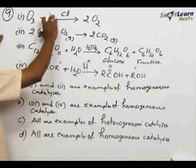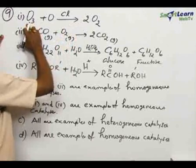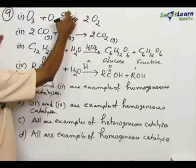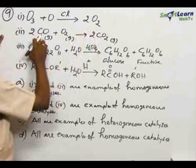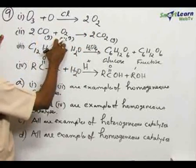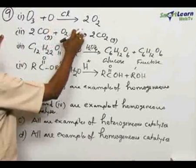Which one is correct? The first reaction takes place in gas phase where reactant, product, and catalyst all are in gas phase - that is homogeneous catalysis. Carbon monoxide and oxygen giving carbon dioxide, all are in gaseous phase, this is also homogeneous catalysis.